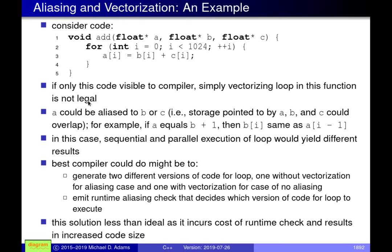To give an example where we're actually contemplating vectorization, here we have a function taking three vectors assumed to be 1024 elements in size, computing a[i] = b[i] + c[i] inside a loop. This code looks beautiful for vectorization: the number of iterations is known before entering the loop — in fact it's a compile-time constant — there are no if statements or ternary operators, no control flow dependencies, and the loop iterations are completely independent of one another.